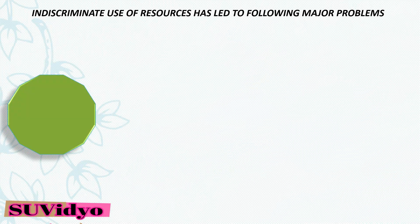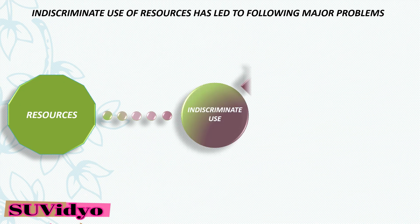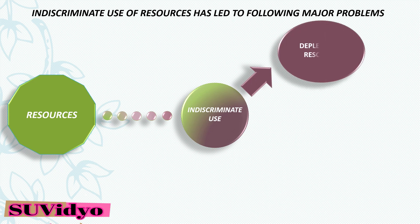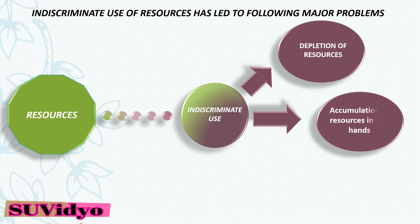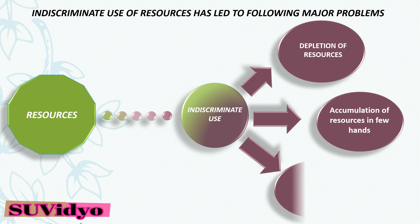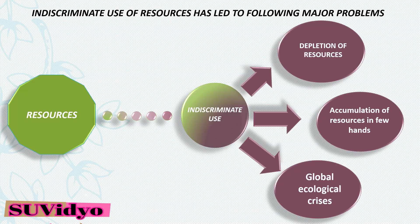The indiscriminate use of resources has led to the following major problems: depletion of resources, accumulation of resources in few hands, and global ecological crisis.